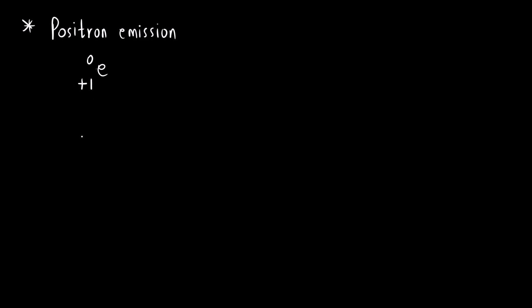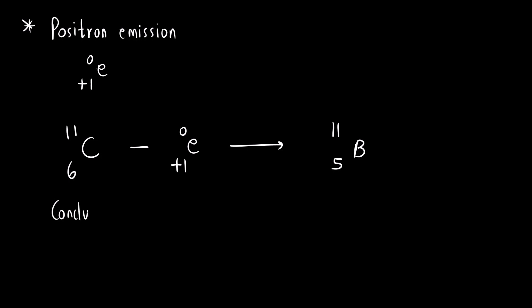Next is positron emission. A positron is similar to an electron — mass is zero but charge is plus 1. For example, carbon-11 (atomic number 6): removing a positron gives 11 minus 0 = 11 for the mass number, and 6 minus 1 = 5 for the atomic number, which is boron. The conclusion: atomic mass number remains the same and atomic number decreases by 1 unit.